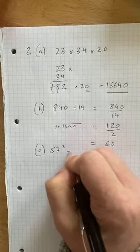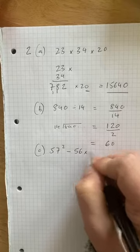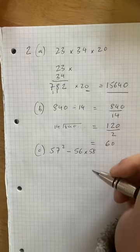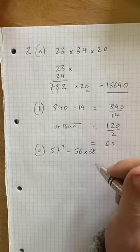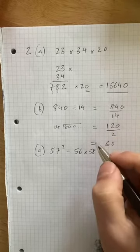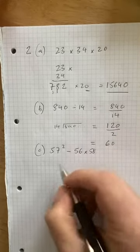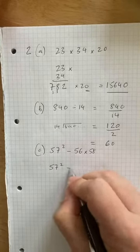57 squared minus. Okay, so let's, I'm going to rewrite this, see whether this works. 57 squared minus.